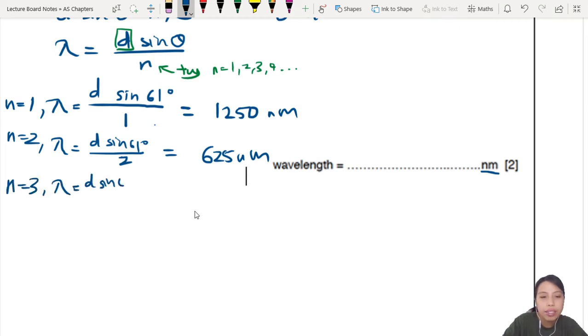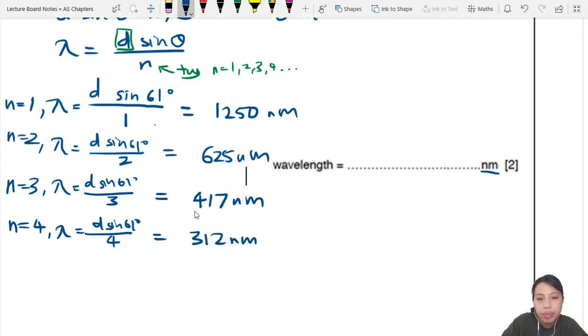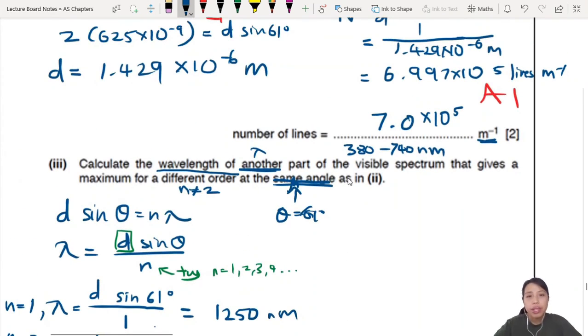Let's try n equals 3. D sine 61 to the same calculation divided by 3 now. D sine 61 is a constant. This one will give you 417 nanometers. Let's go one more just in case. λ equals D sine 61 over 4. This will give you 312 nanometers. I'm going to stop there. You can keep going. But how do you know when to stop? You can have so many order. But you only want the light in your visible spectrum.